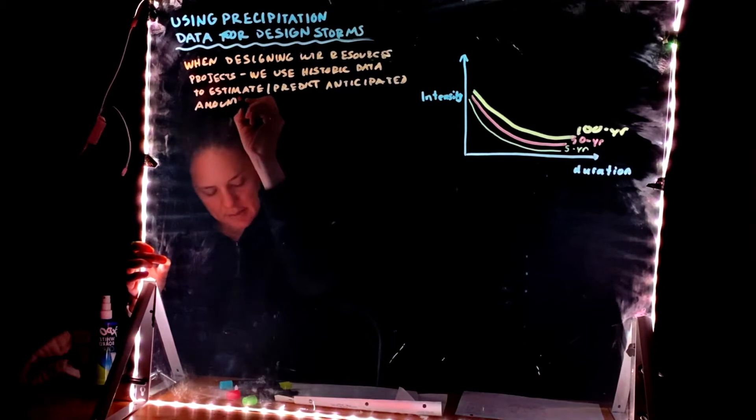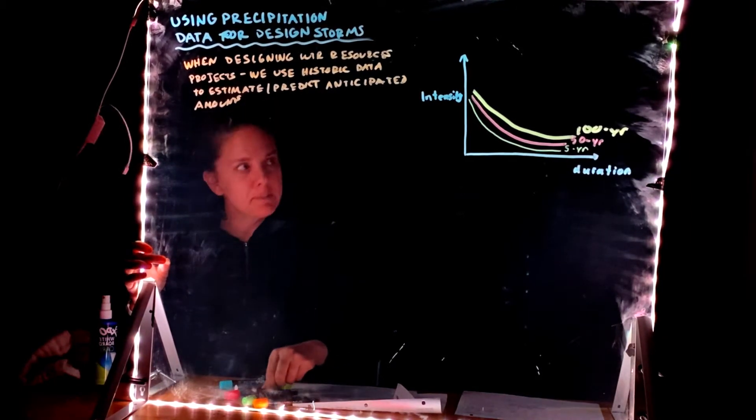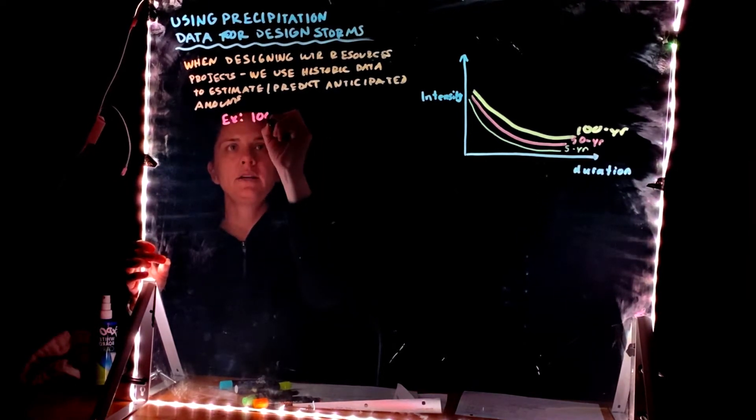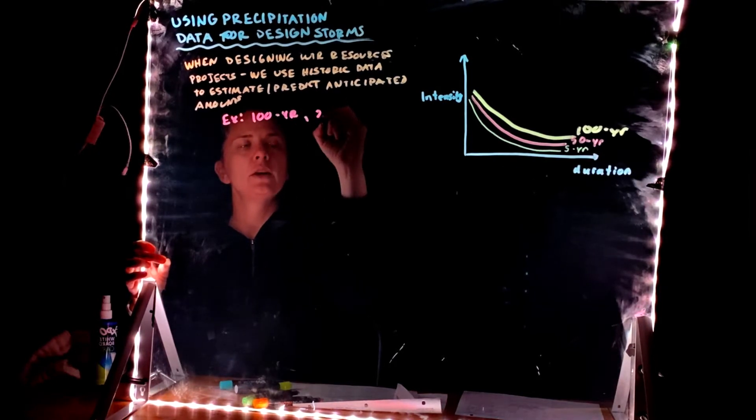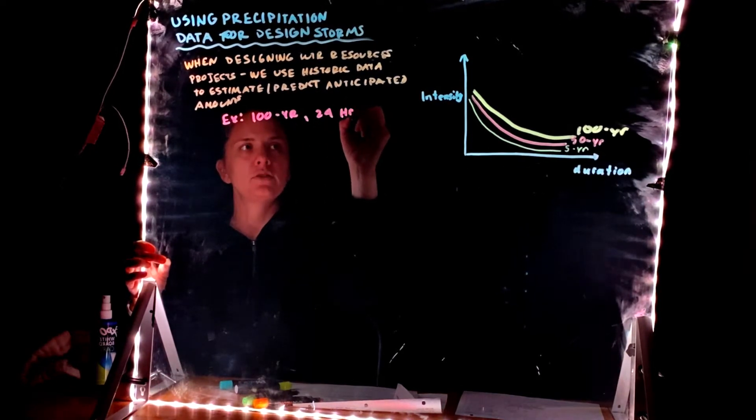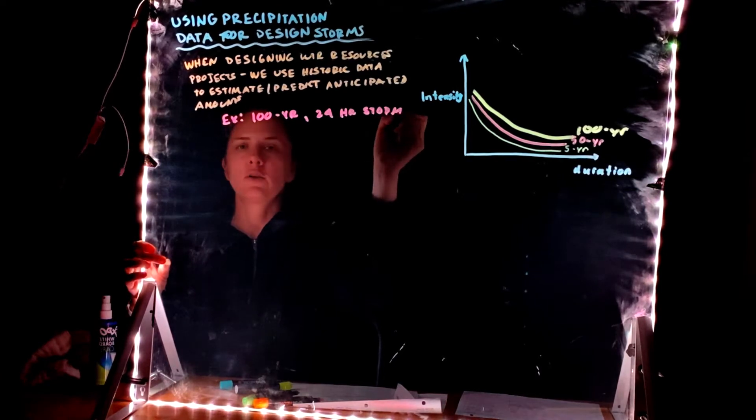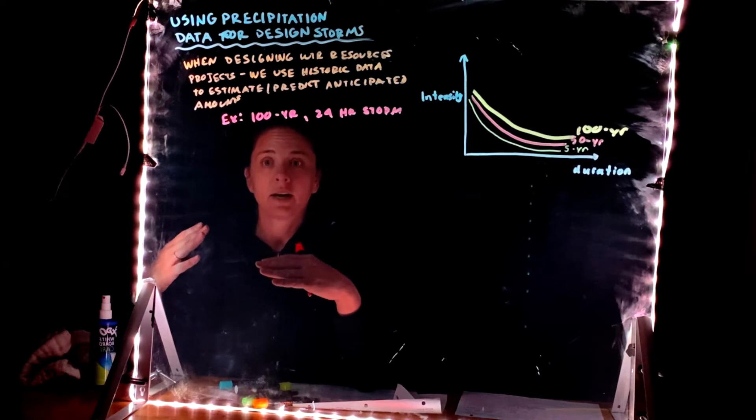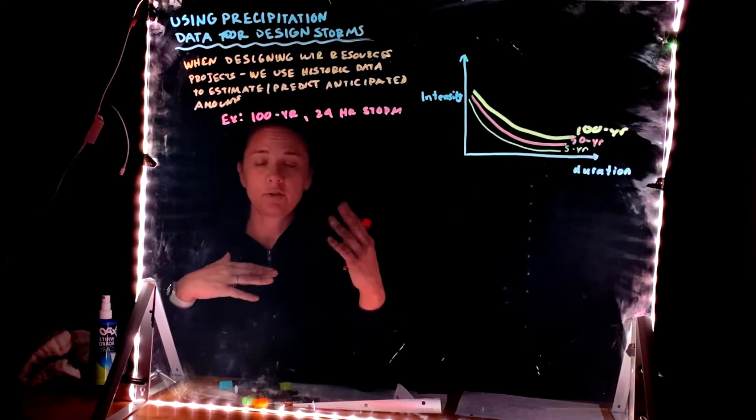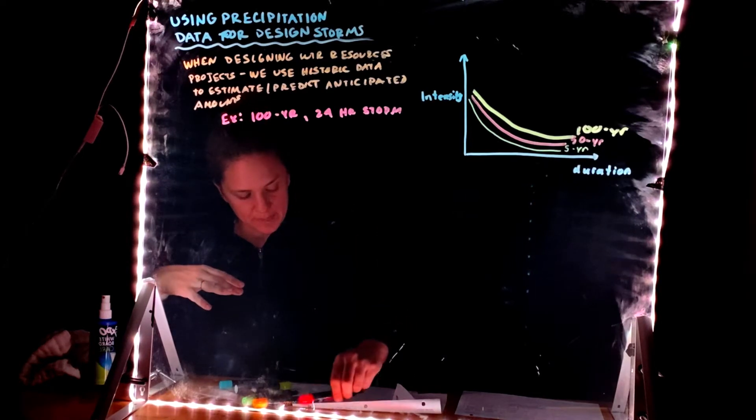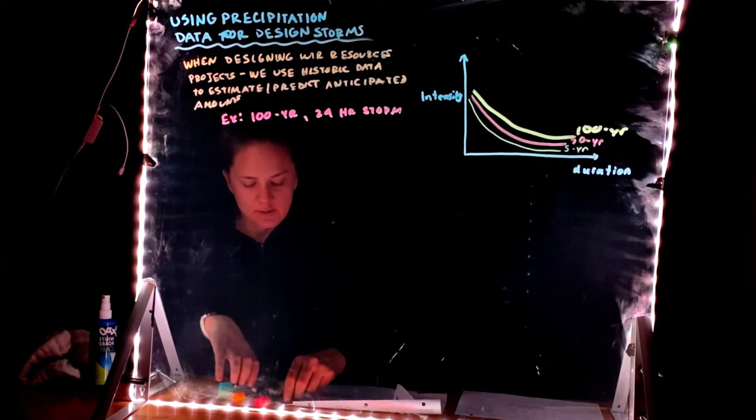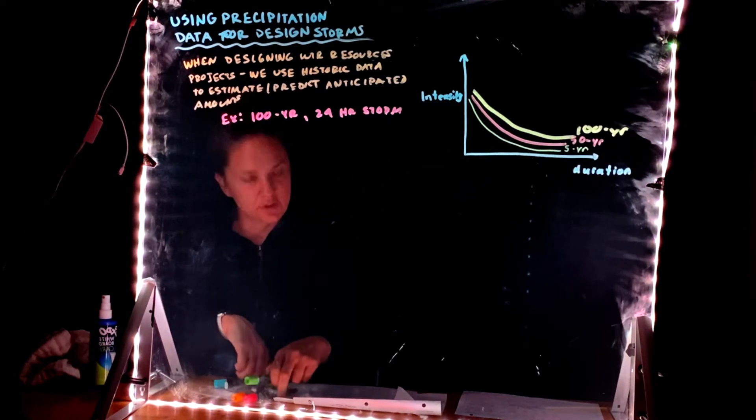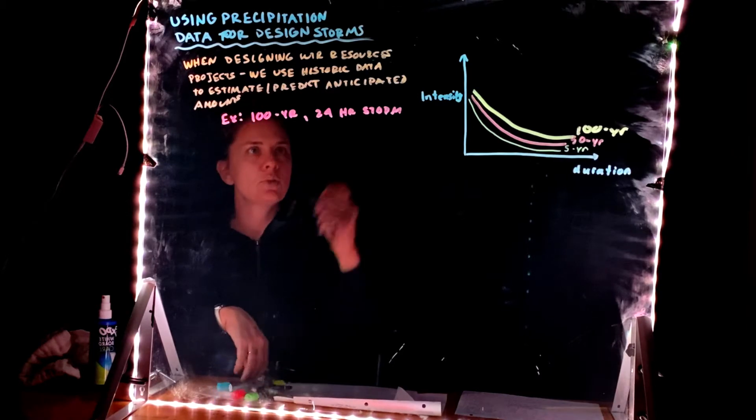So again when I say this as an example, I might be designing for a 100-year, 24-hour storm. Or quite often in stormwater design you're doing a two-year storm in a five-hour duration or a one-hour duration. And what does this mean? What does the 100-year, 24-hour storm mean? I'll start with this little bit easier one. This 24-hour storm, this is the duration.